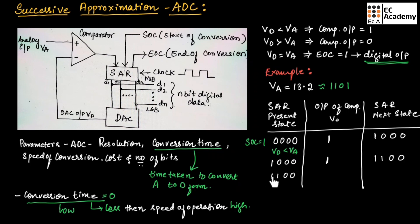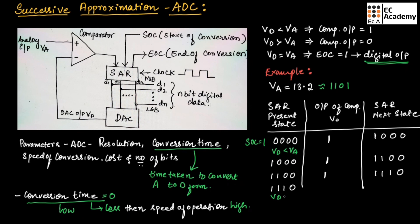With present state 1, 1, 0, 0, this value is still less than the input signal, so the output of comparator will be 1. This 1 will replace the next bit and the SAR next state will be 1, 1, 1, 0. Now, with present state 1, 1, 1, 0, this value is greater than the input signal, so VD is greater than VA. The output of comparator will be 0, so this bit will be replaced with 0 and the next bit is made as 1.